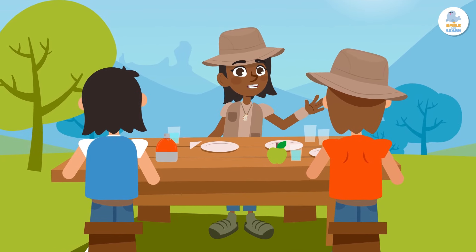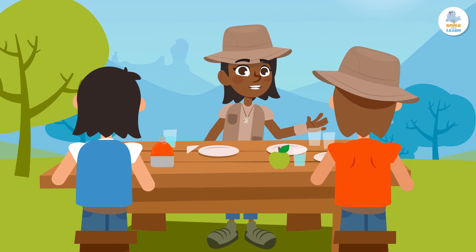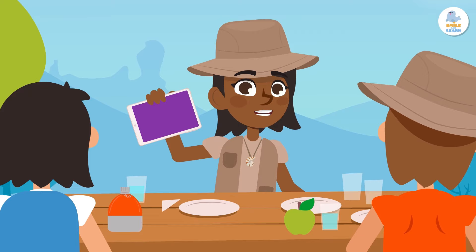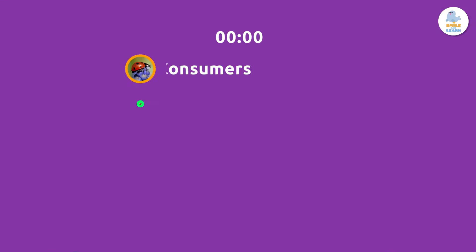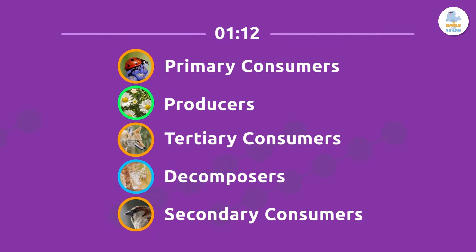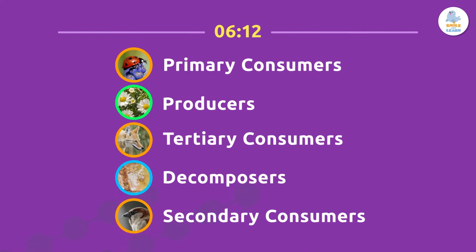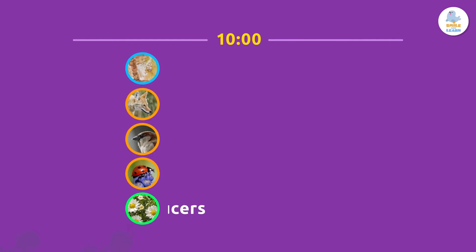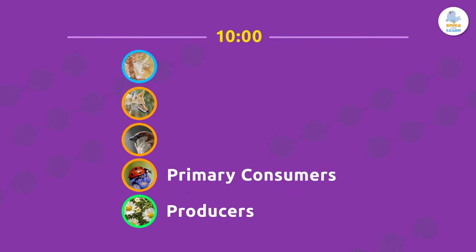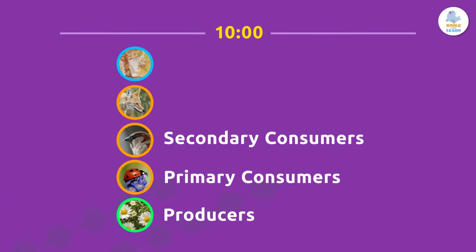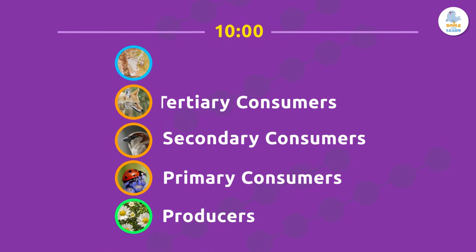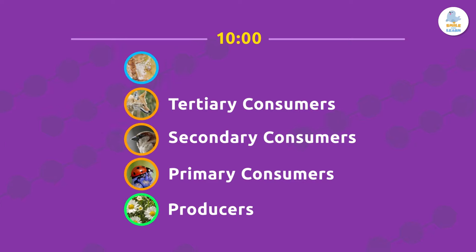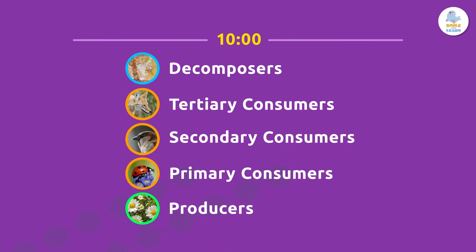Remember that all living things need energy to live. A food chain helps us to see where living things get their energy. There are different levels within food chains. First we have the producers. Producers are eaten by primary consumers. Primary consumers are eaten by secondary consumers, and secondary consumers are eaten by tertiary consumers. And who makes sure that the cycle starts all over again? Exactly — the decomposers, by eating the tertiary consumers.